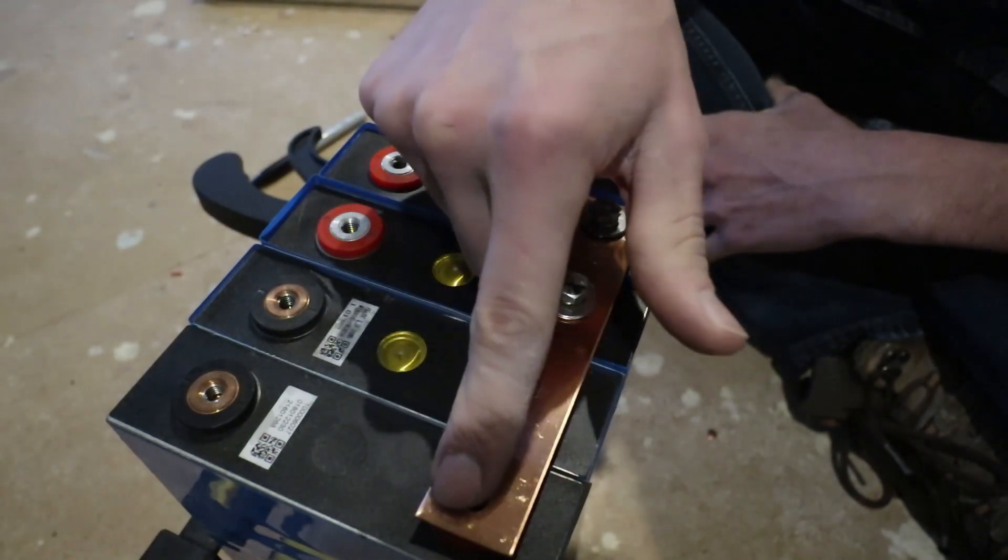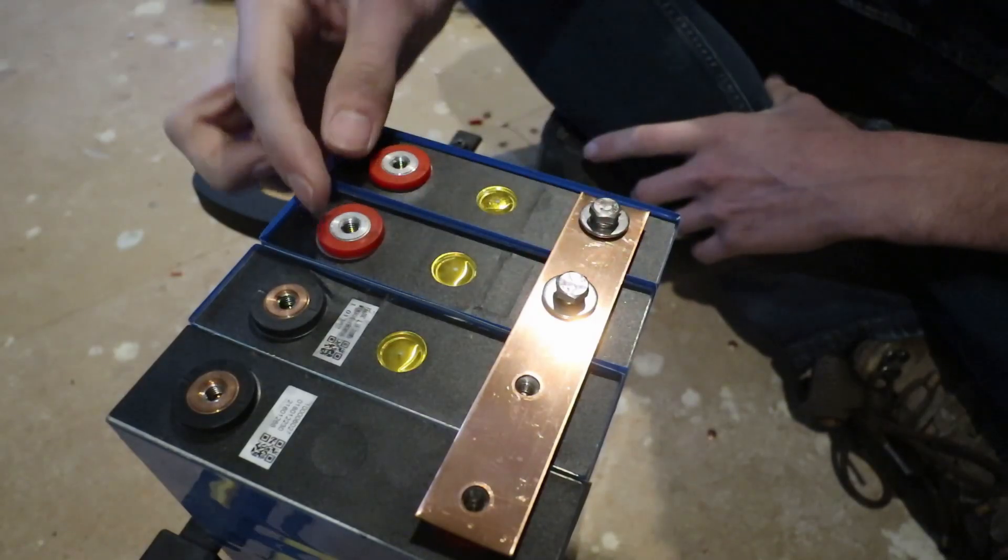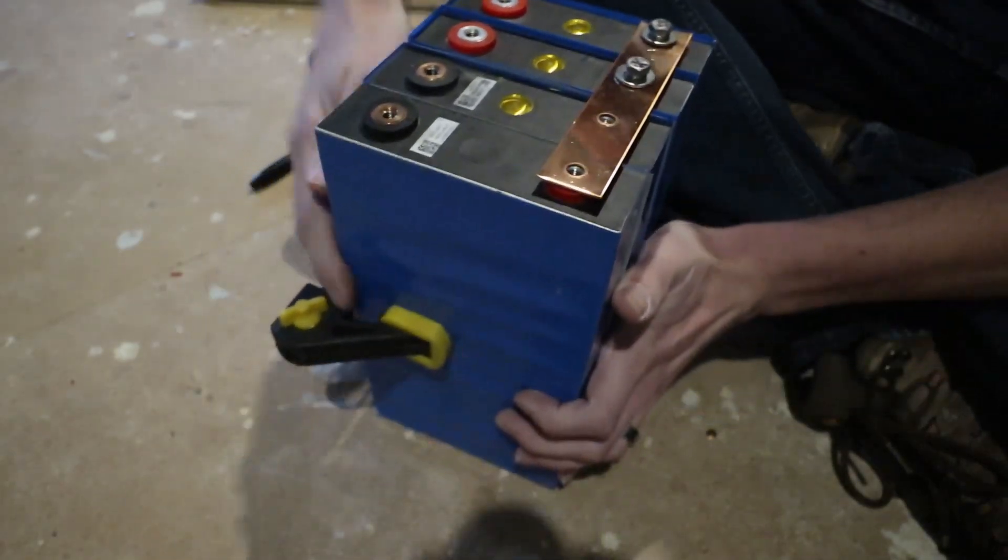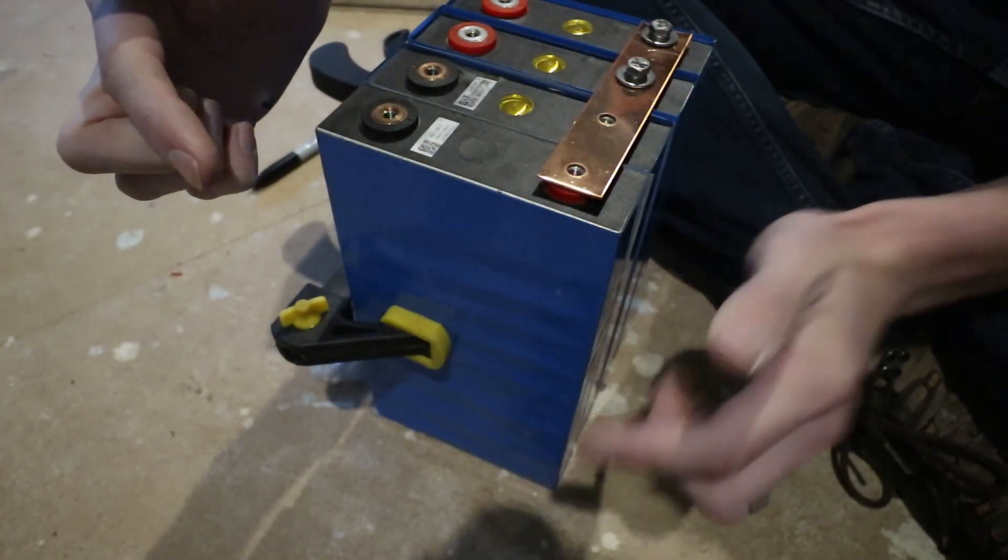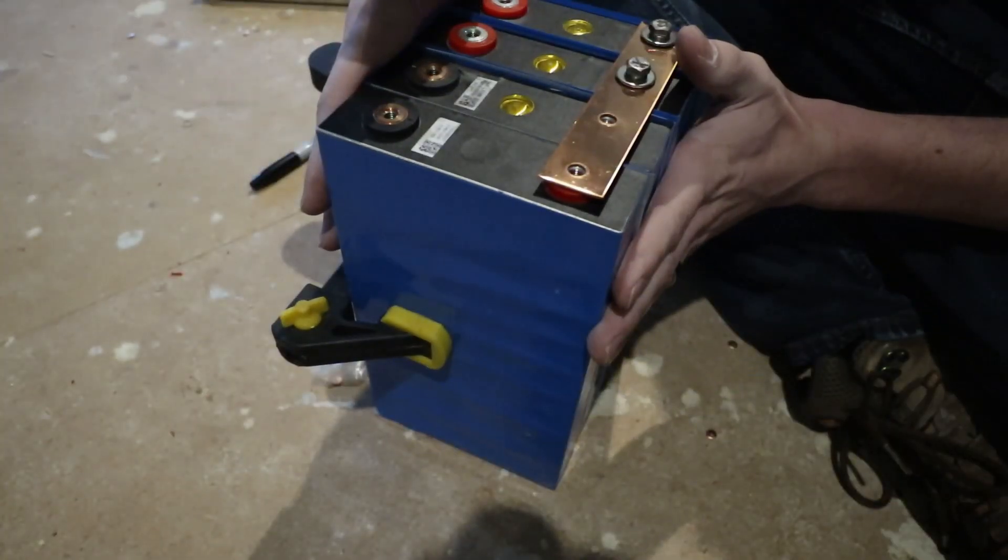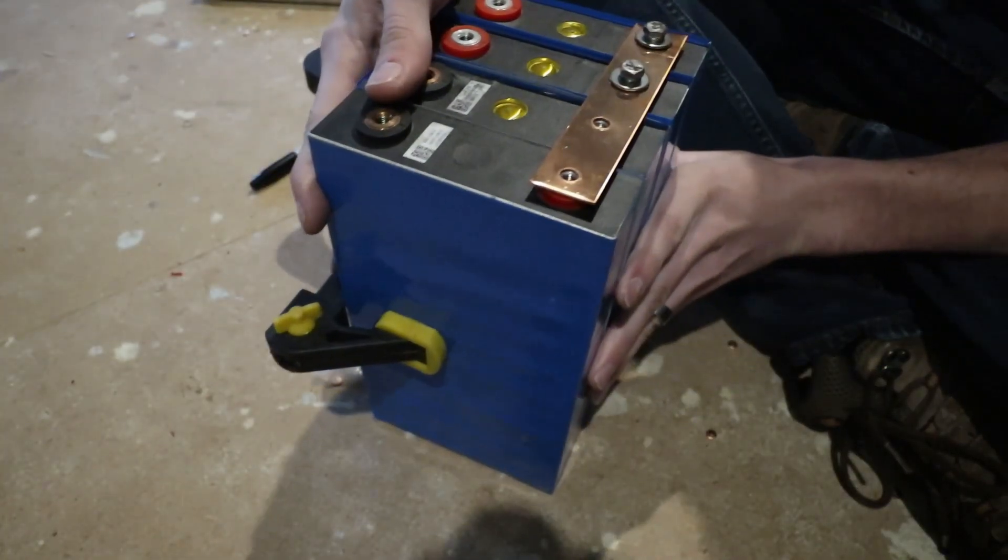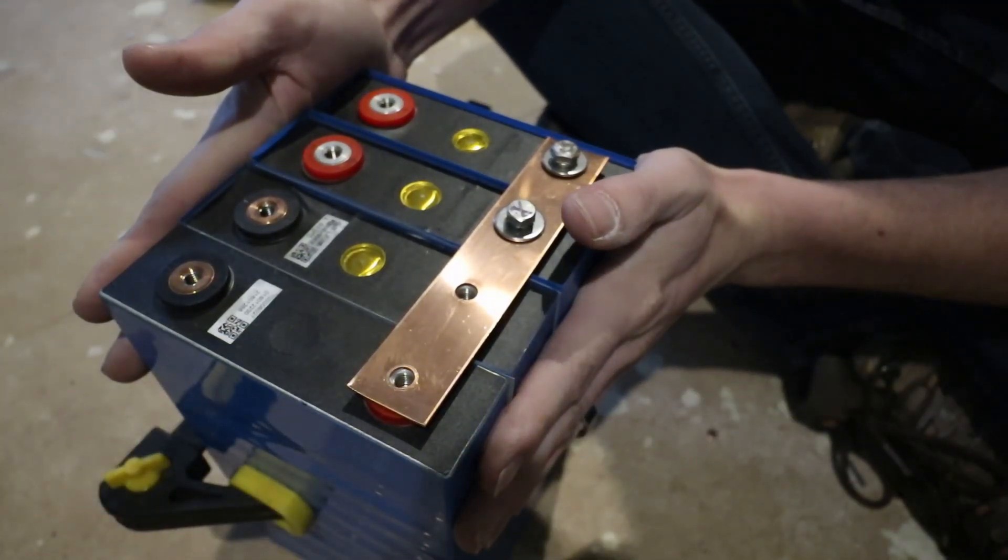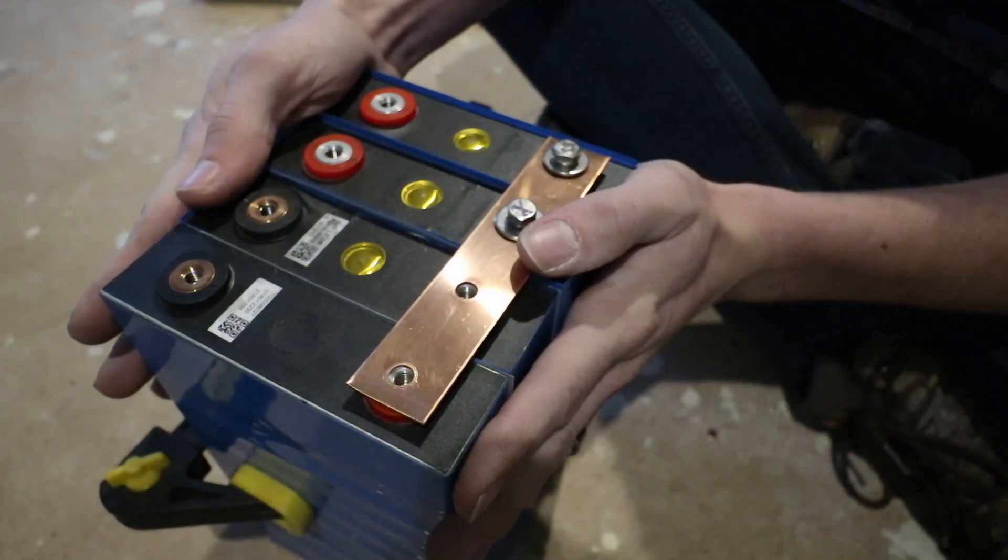So here I'll do a four position bus bar. Here will just be a two. Here will be a four. And then that'll be four across. This one will be four across, and then another two. I'll show you the picture once I get all of this done and what it looks like as a full 200 amp hour 12.8 volt lithium iron phosphate battery.